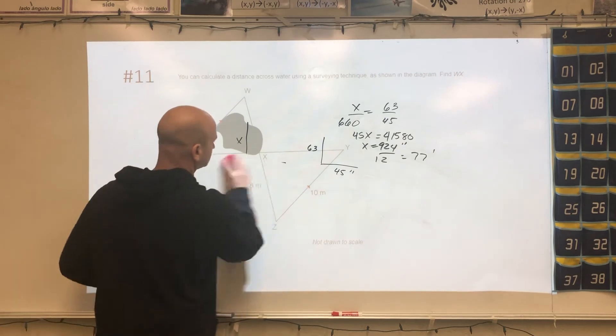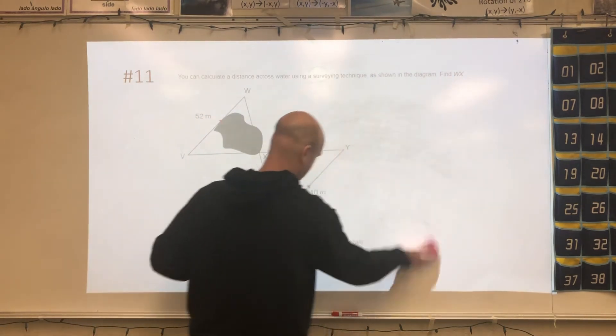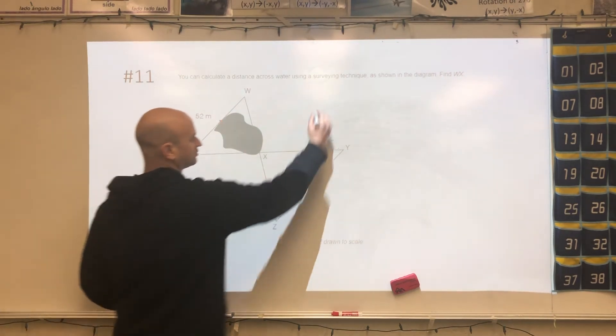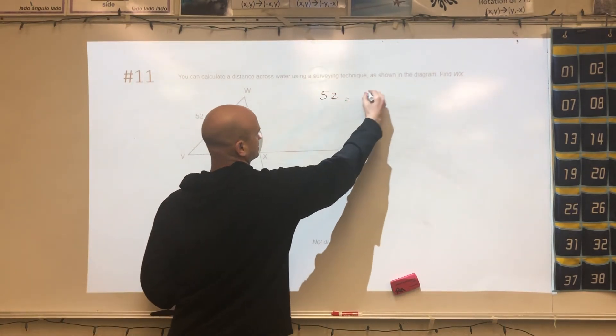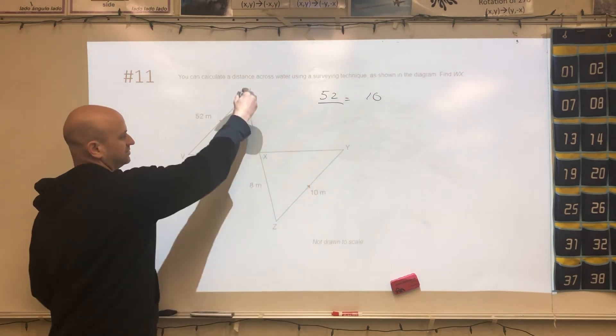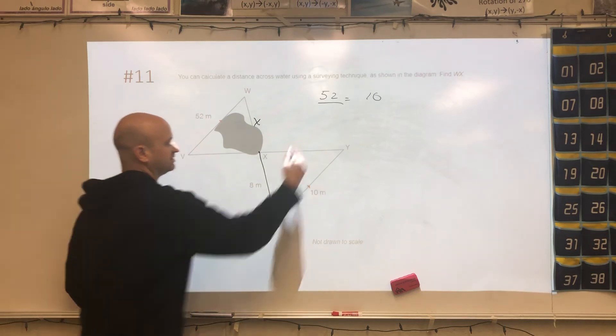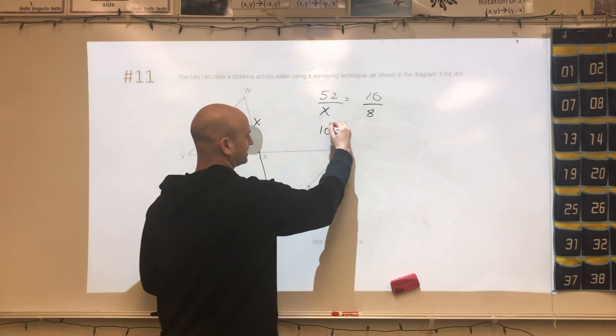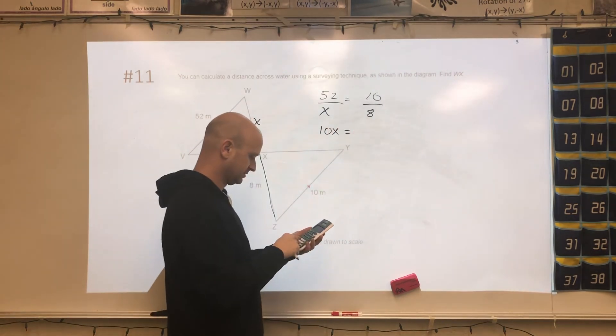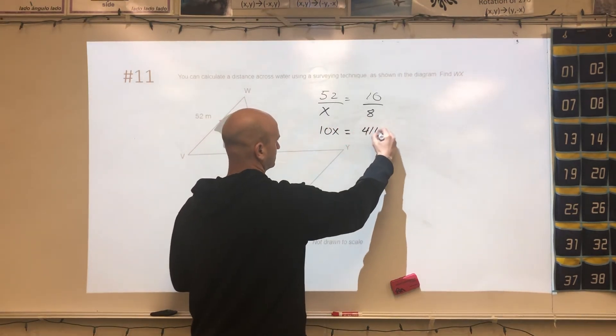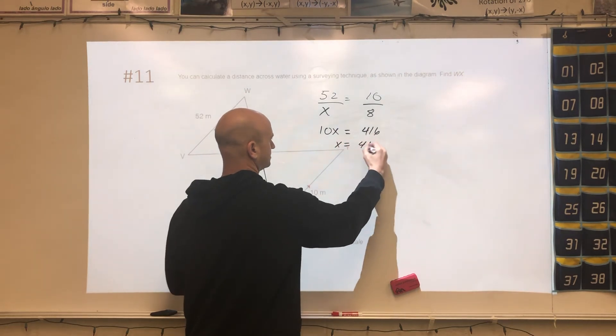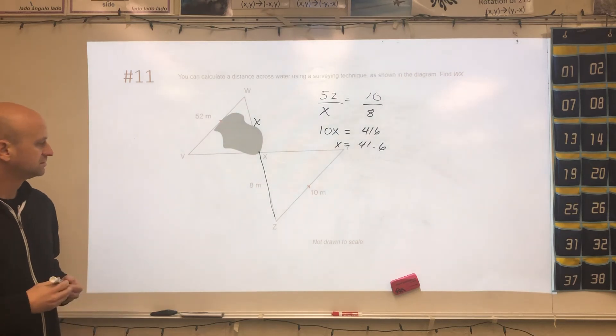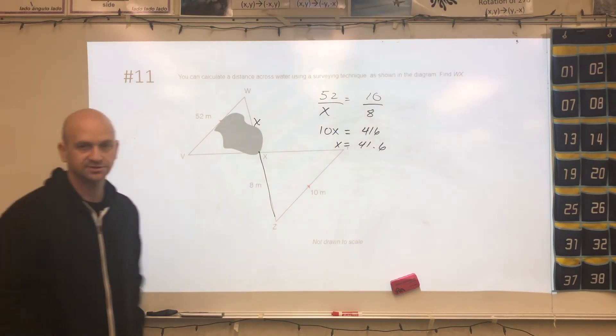All right, and the last question is we want to find the distance across the lake. So 52 is going to partner up with 10, and then they want WX, which is here, and that's going to partner up with 8. So X will partner up with 8. So I get 10X is equal to 416. 41.6 feet. All right, there you go.